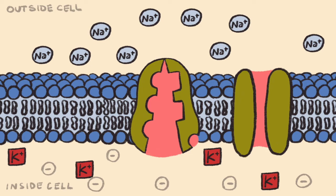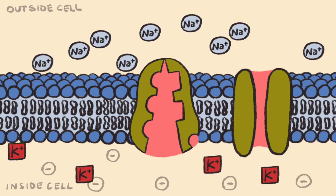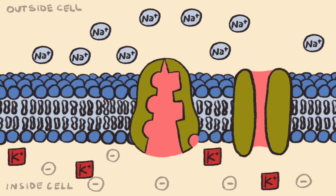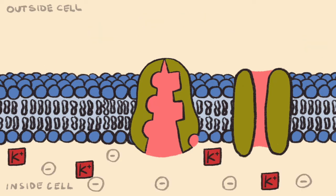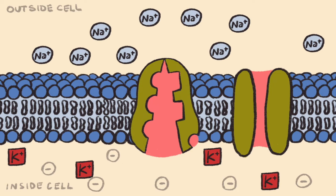This creates an environment in which there are exceptionally strong sodium and potassium electrochemical gradients — way more sodium outside the neuron, way more potassium ions inside the neuron.